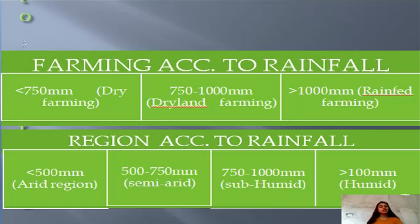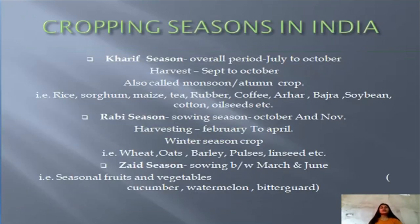According to rainfall classification: less than 500 mm is one category, 750 to 1000 mm is another, and more than 1000 mm is yet another category. Now we will see the cropping seasons in India.